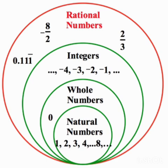Next, division — Rational Numbers are not associative under division. Under subtraction and division, it is not satisfied. Only in closure property, subtraction is satisfied. In commutative and associative, under subtraction and division, it is not satisfied.